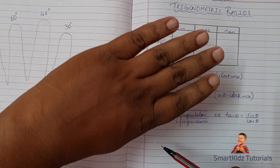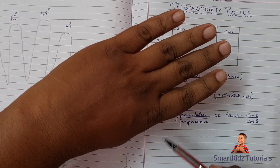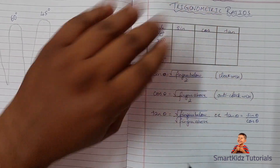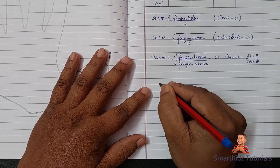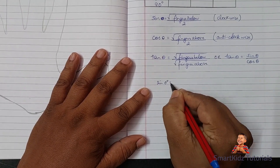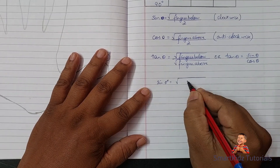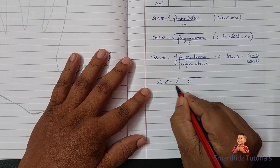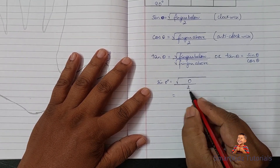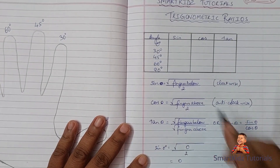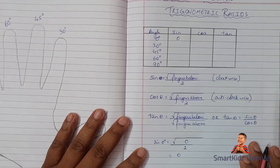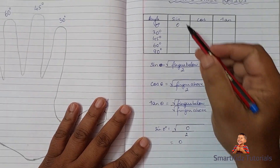The formula is: fingers below upon 2. If I close the thumb — that is 0 degrees — there are zero fingers below it. So sine of 0 degrees equals square root of 0 upon 2. The square root of 0 is 0, and 0 upon anything is 0. So sine of 0 degrees is 0.